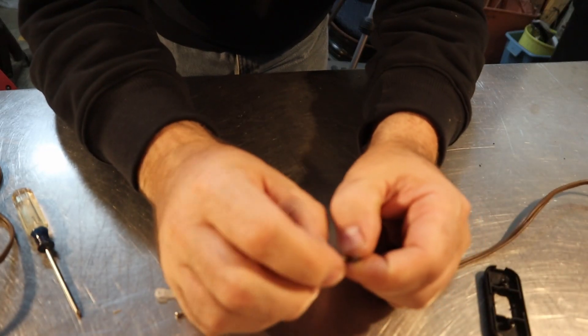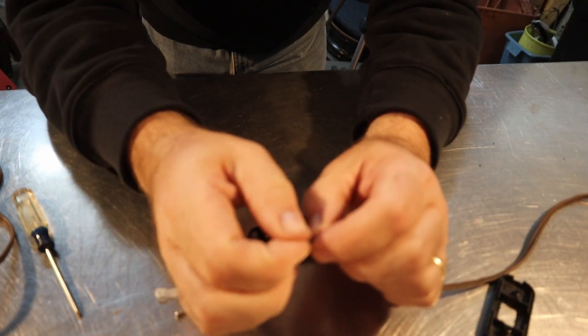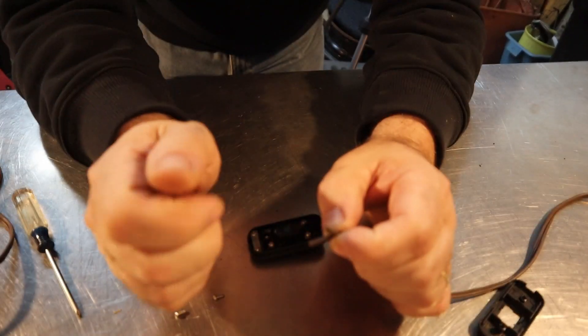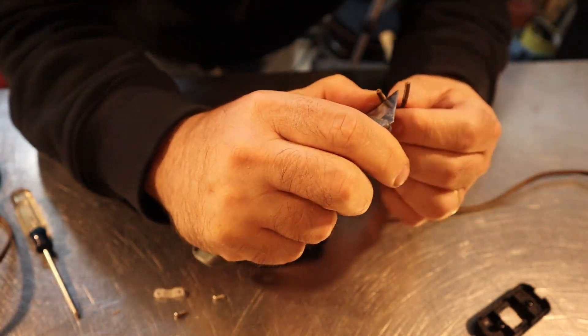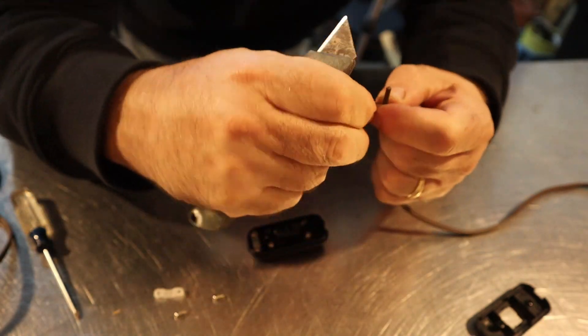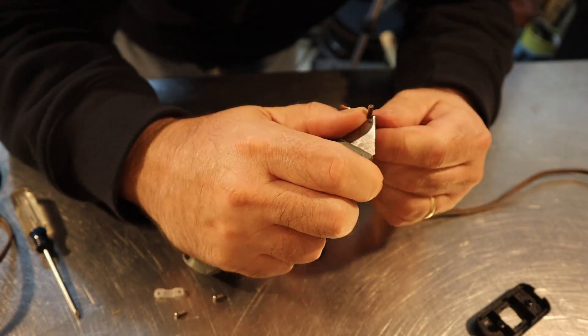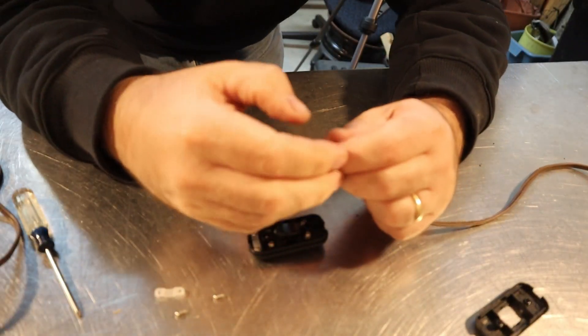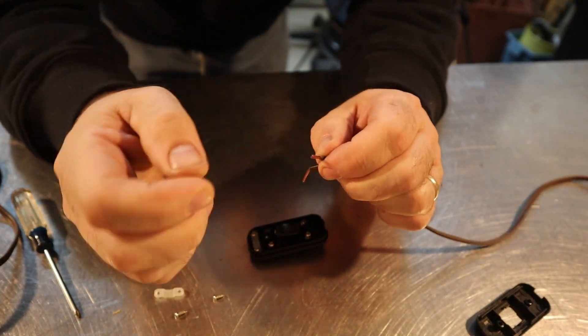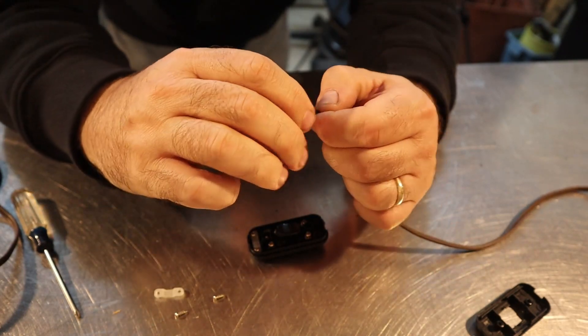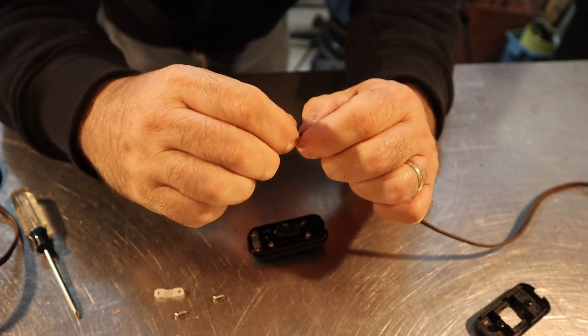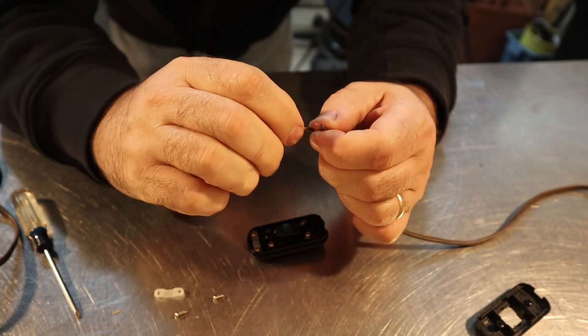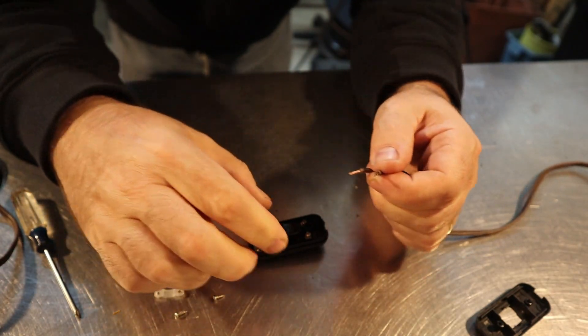And now I'm going to just strip a little bit of the insulation off of each of the ends of the wires. Alright, so you could tin the ends of these and put some solder on them, but I'm just going to twist them up. Okay.